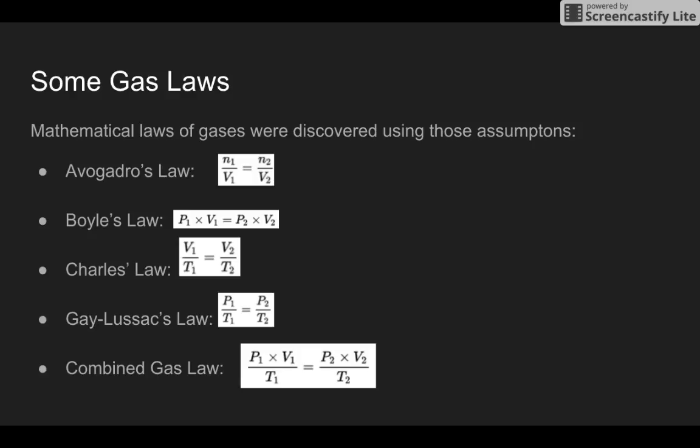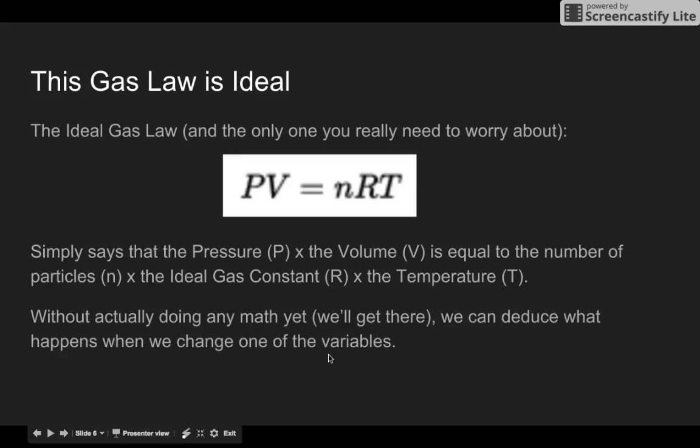And then we can combine all those together and look at the combined gas law, which describes all of those things. We also have the ideal gas law, which takes into account the number of particles. The combined gas law doesn't. But it's essentially the same thing. We say that the pressure times the volume is equal to the number of particles times the ideal gas constant times the temperature. And we'll get to that math later.